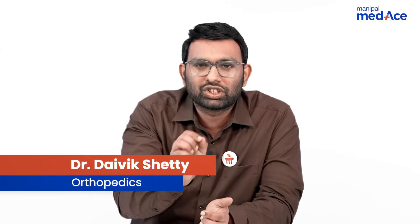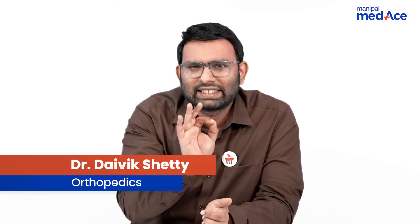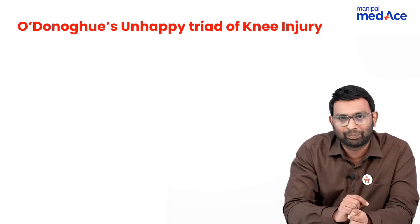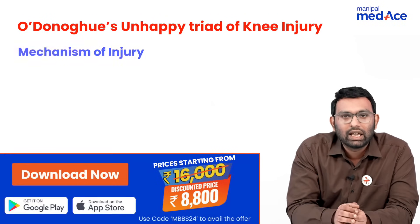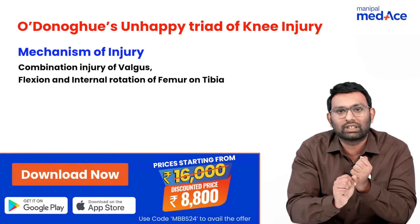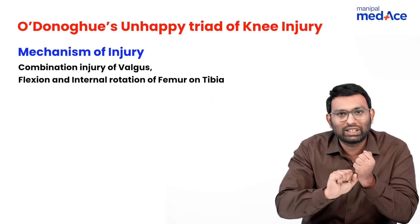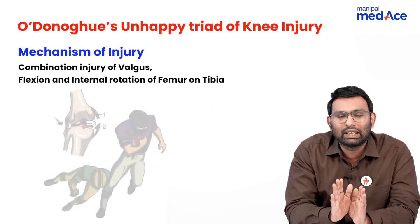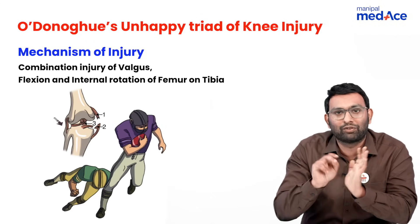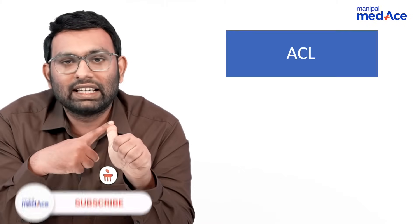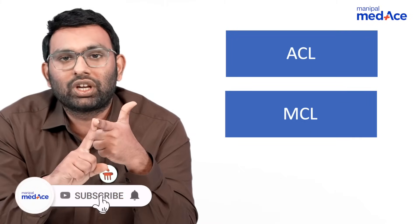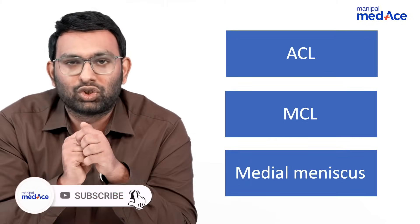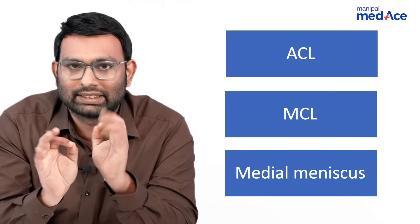This gruesome injury that you just saw on your screen was the exact mechanism of an injury called O'Donoghue's Unhappy Triad. What happens in this injury is that there is a valgus force, a flexion force, and also internal rotation of the femur over the tibia. This is commonly seen when an athlete is running and gets tackled from the side. The components of this triad are an ACL injury, an MCL injury, and a medial meniscus injury.